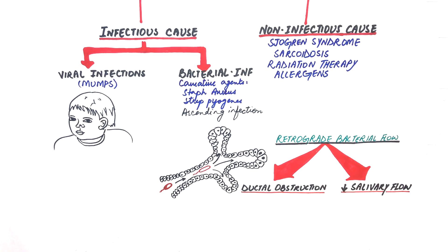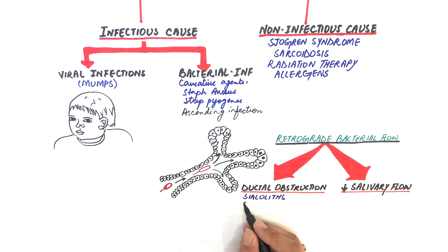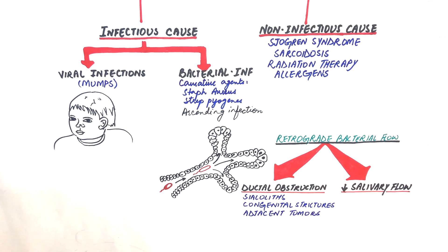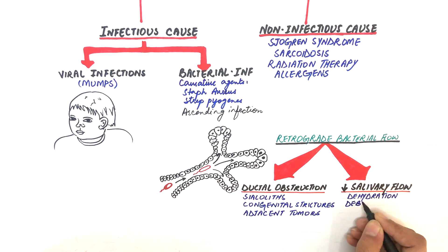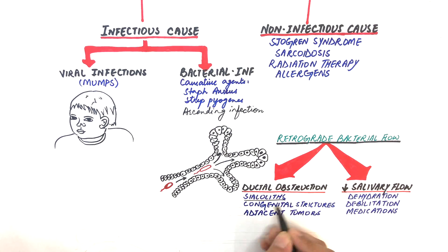The ductal obstruction can be caused by calculi, congenital strictures, or compression by an adjacent tumor. On the other hand, decreased salivary flow can result from dehydration, debilitation, or certain medications that inhibit salivary secretions.